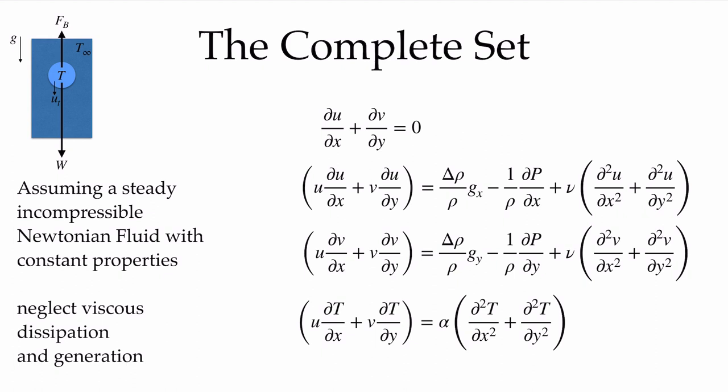If those density changes are large, we'll have to go back to a previous form of these equations before we pull the density out of our divergence operators. But for the purposes of this course, we're going to assume that the Boussinesq approximation is perfectly valid and carry on. What I'd like to do now is think about the implications of natural convection — the implications of having these net buoyancy forces acting on parts of our fluid, and what that will do to our solutions.